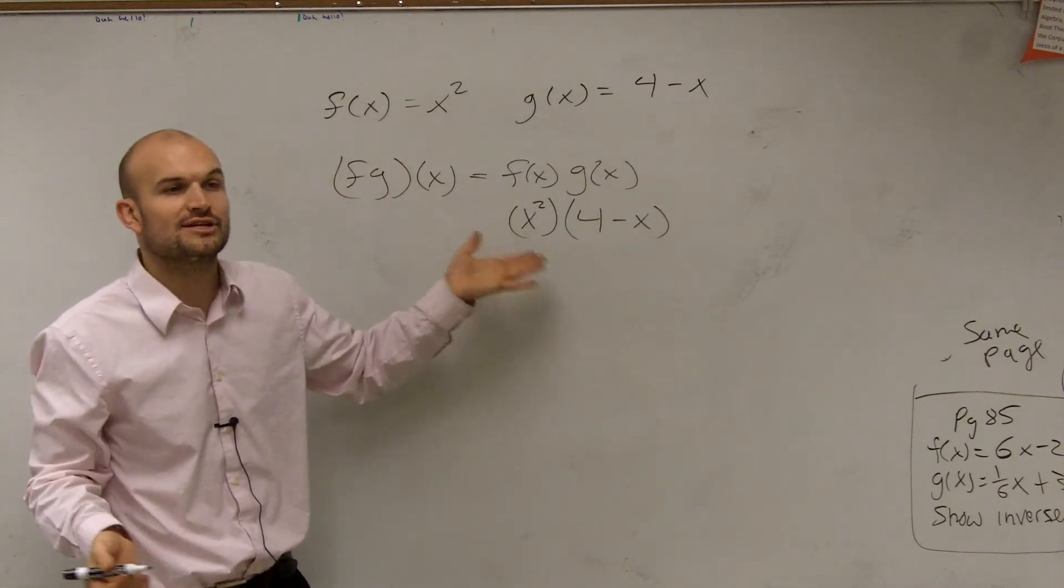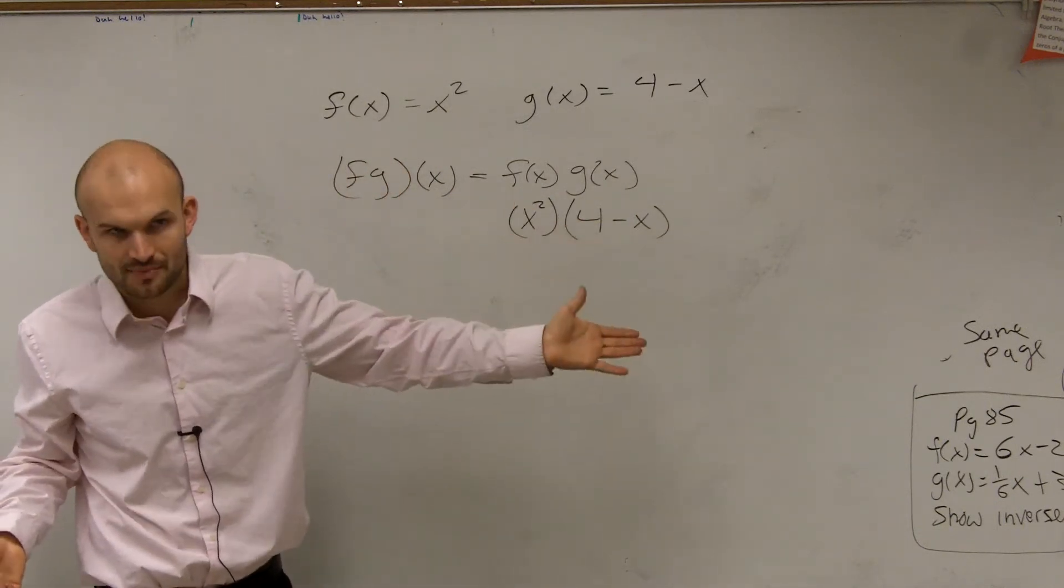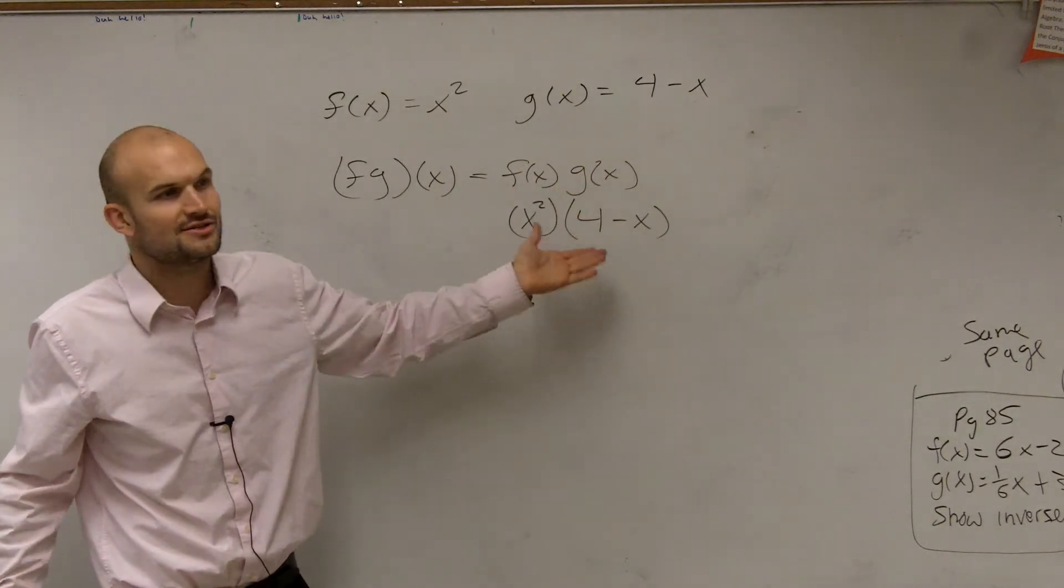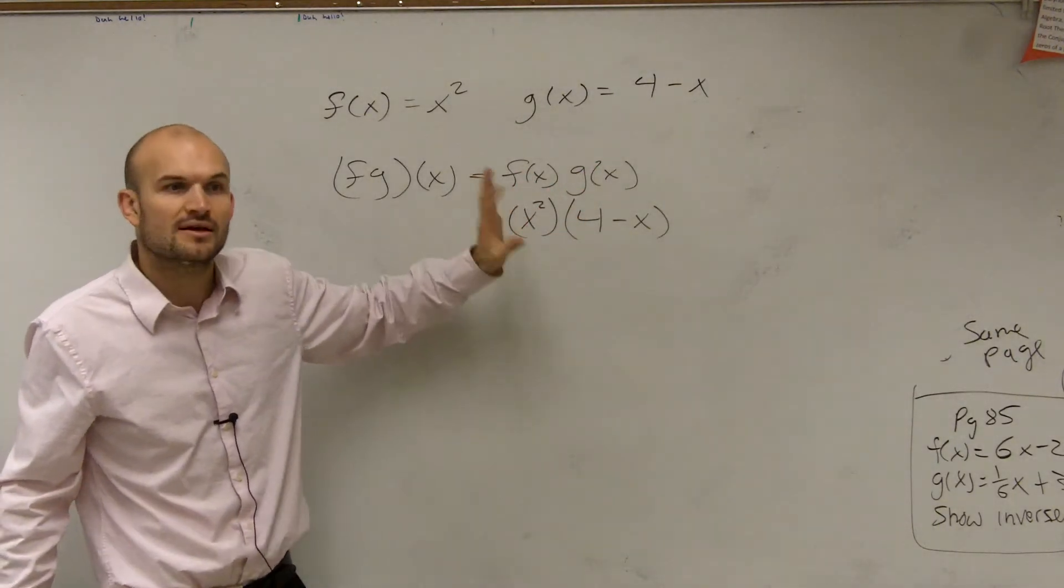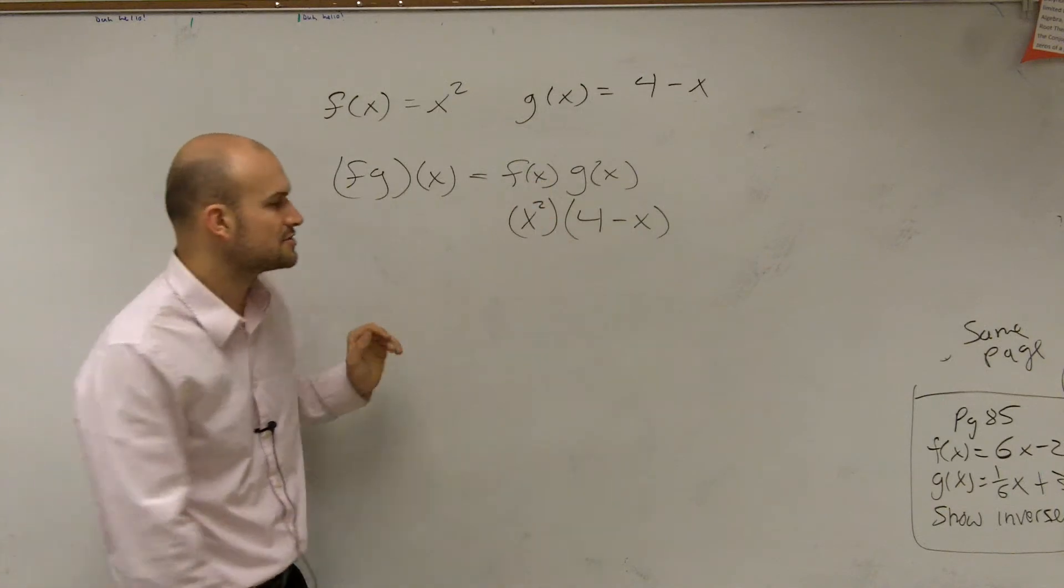Then you guys can see, oh, we have to make sure we apply distributive property. If you forget to put the parentheses, guys, you're going to make the mistake. You're just going to multiply the first two terms. Put them in parentheses so you can apply the distributive property.